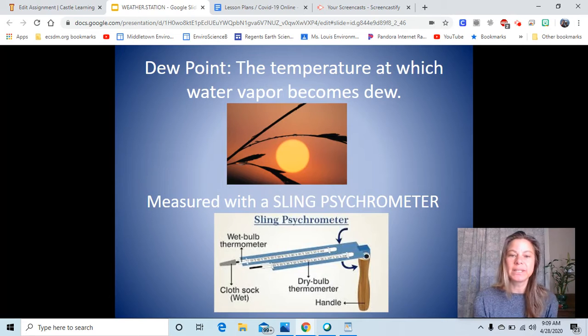And we measure temperature with a thermometer, and that tells you whether it's warm or cold. And that is important in relationship to something called the dew point. And the dew point is the temperature at which water vapor becomes dew. And dew is those little droplets of water that collect on grass.